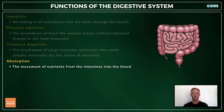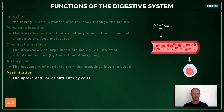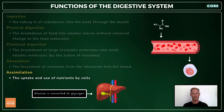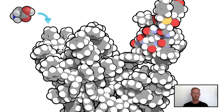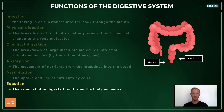Absorption is the movement of nutrients from the intestines into the blood, and this mostly takes place in the ileum. Assimilation is the movement of digested food molecules into the cells of the body from where they are used. For example, in the liver, excess glucose is converted into glycogen for storage, or broken down through respiration, and amino acids are used to build new proteins. Finally, egestion is the passing out of food that has not been digested or absorbed as feces through the anus.